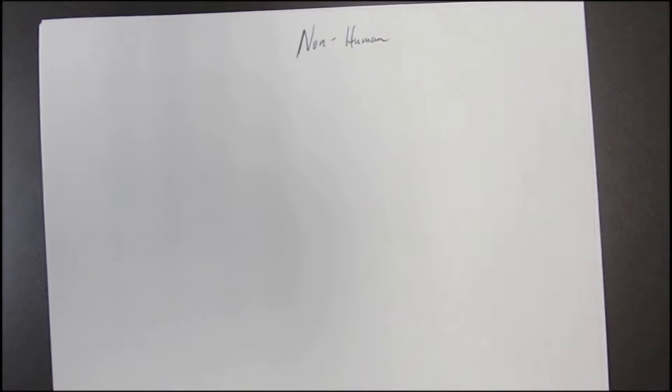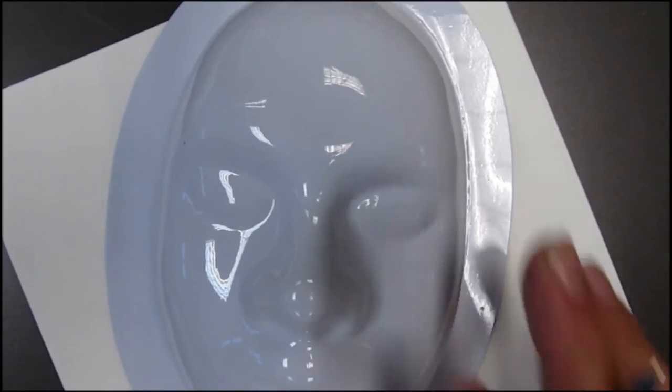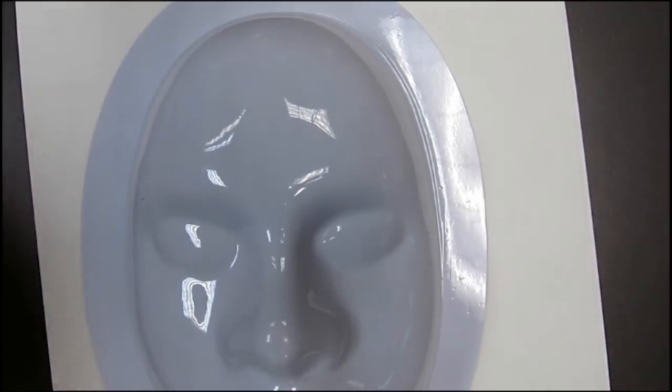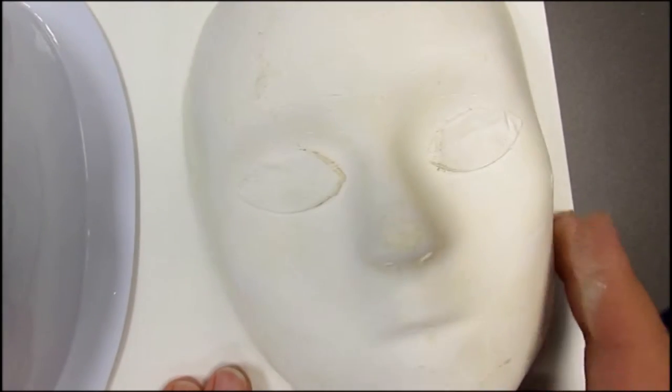So a couple things we've got to go over today. Now with the non-human, we've got a couple things we need to talk about. First off being the form. Now here we have a human form and this is one that I made a couple years back out of plaster.